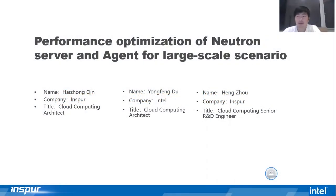Hello, everyone. My name is Jin Haizhong, and I'm from INSPAR. The topic I share is performance optimization of neutron server and agent for large-scale scenarios.